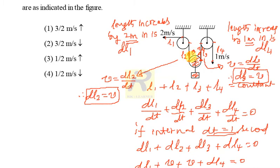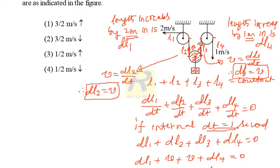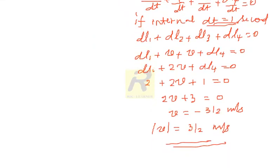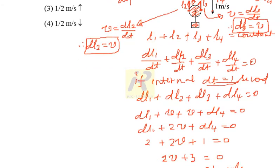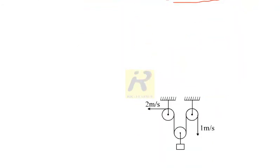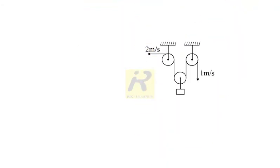Since the pulley is moving up with speed 3/2 meters per second, the block should move up with the same speed. So the answer from the first method is 3/2 meters per second. Now let me show you the second method using the same picture.